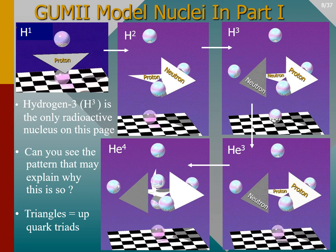Starting with the hydrogen-1 atom, the nucleus is just a single proton — nothing unusual about that. The only change from the GUMMI proton model is that the three up quarks are now shown as a triangle, which is a more visible way to show where the up quarks are located, namely at the points of the triangle. The GUMMI model for an atomic nucleus will always be drawn with triangles and spheres: triangles for quark triads, reflective silver spheres for electrons, and semi-transparent spheres for go-to zones.